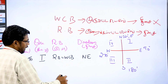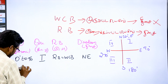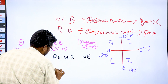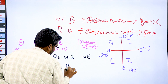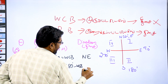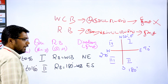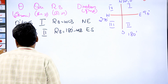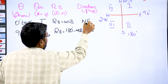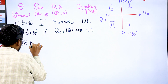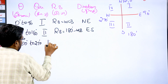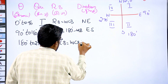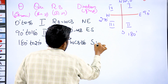The next quarter is 90 to 180 degrees — the second quarter. The formula is RB equal to 180 degrees minus WCB. The direction is South East. For the third quarter, 180 to 270 degrees, RB equals WCB minus 180. The direction is South West.